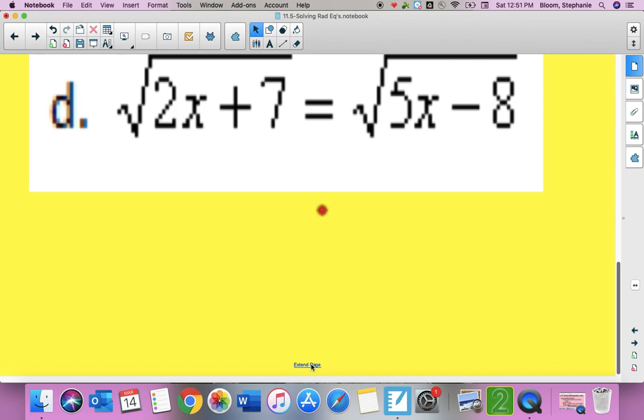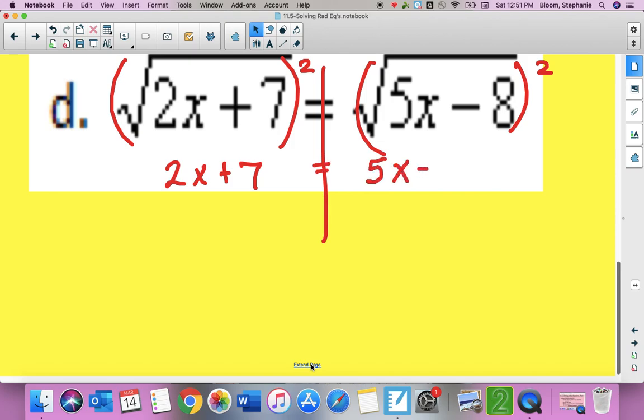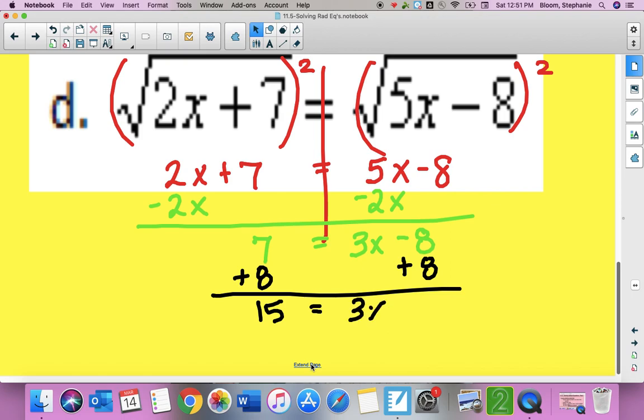Again, I have square roots on both sides of the equal sign. I'm just going to get rid of them by squaring both sides. And that means I bring down 2x plus 7 is equal to 5x minus 8. Again, I'm going to move my smallest variable first. So I'm going to do that by subtracting it, putting it under its like term. So 7 is equal to 3x minus 8. And then I'm going to add 8 to both sides. So 15 is equal to 3x. And then I'm going to divide everything by 3. And so x is going to be equal to 5.